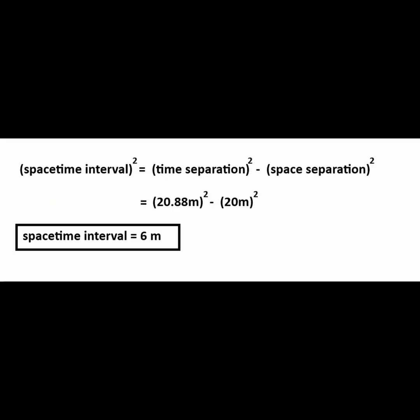So the spacetime interval squared is equal to 20.88 squared minus 20 squared, and the spacetime interval once again is 6 meters.